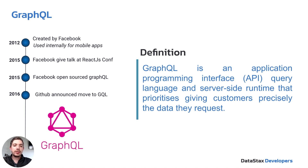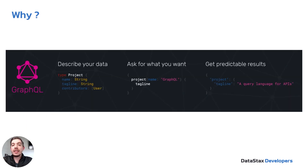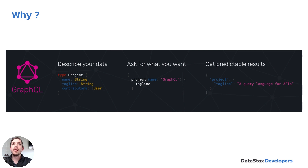GraphQL lets you specify which data you want and just sends that back, which really reduces bandwidth — it's very useful for mobile applications. GraphQL requires a schema; you describe your data by creating types. For example, a type called 'project' might have name, tagline, and contributors. We can nest these types to create a hierarchy. In a query, if you ask specifically for the tagline where the project name is 'GraphQL', all you get back is the tagline — not the name, not the contributors.